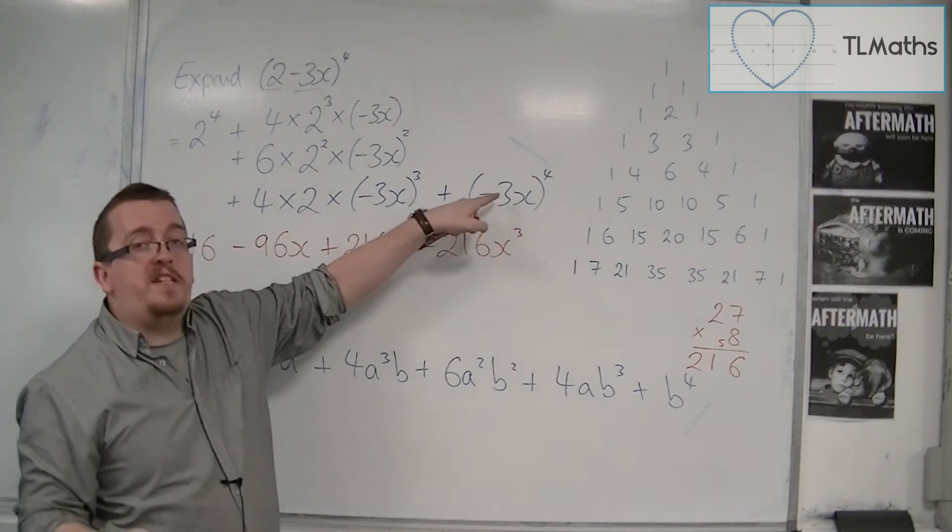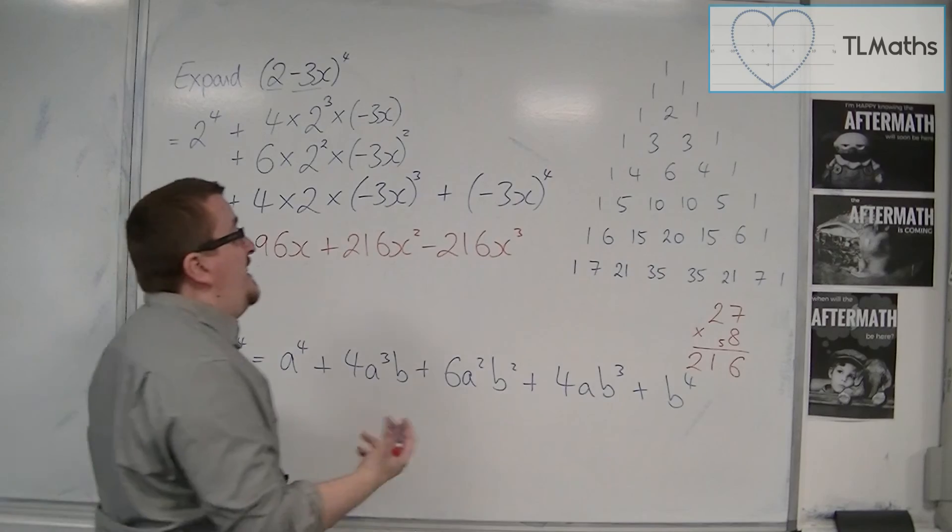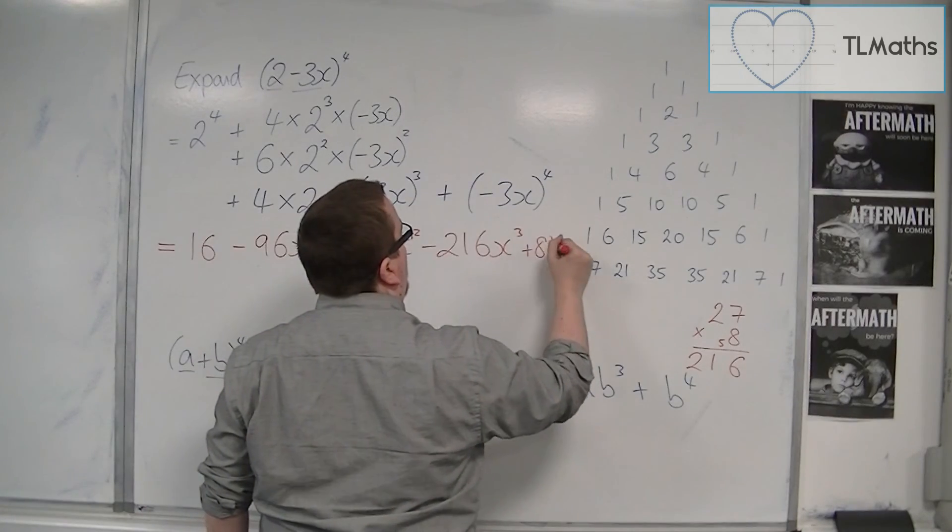And then finally we've got minus 3 to the power of 4, so that's 81, so plus 81x to the 4.